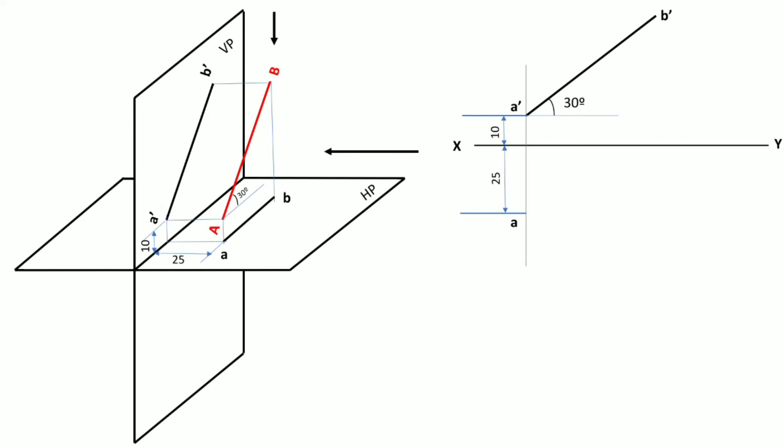We know that A-dash and B-dash come on the same projector line, and similarly B-dash and B come on the same vertical line, because it is the projection of that point in the top view. We draw a straight vertical projector line for point B. In the top view, line AB is parallel to the XY line, so we draw a line from point A parallel to XY. Wherever it meets the projector of B, that point becomes point B. This gives us the front view and top view of line AB.